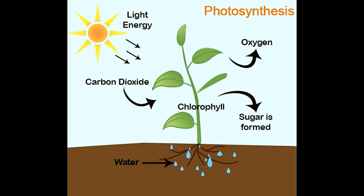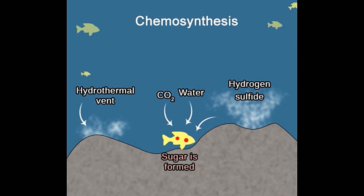Photosynthesis versus chemosynthesis — What is it? Photosynthesis is a process in which plants use light energy to combine carbon dioxide with water. The reaction produces sugar, glucose, which is utilized by the plants for their survival. Chemosynthesis is a process in which bacteria derive energy from the oxidation of inorganic compounds, such as hydrogen sulfide. The energy obtained is used to react carbon dioxide with water to make sugar.